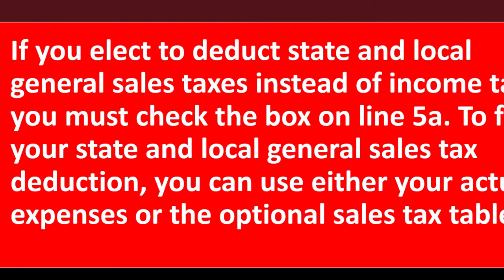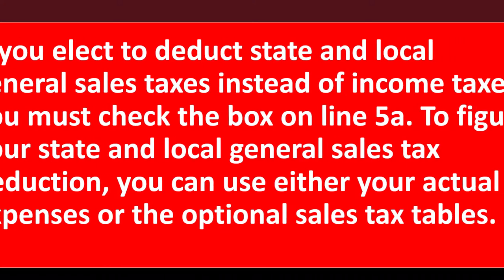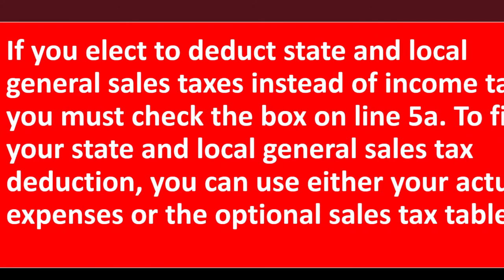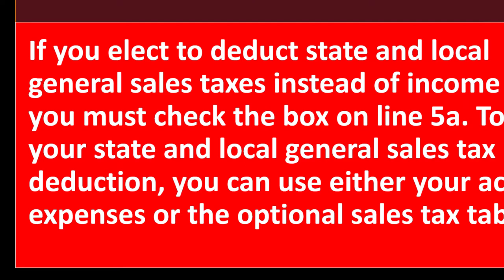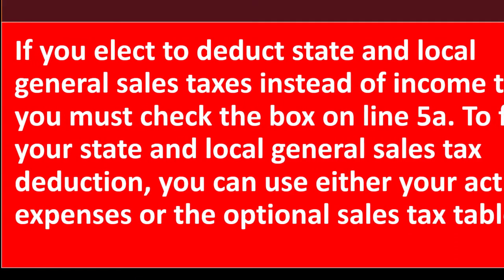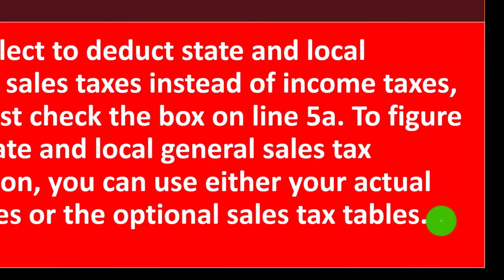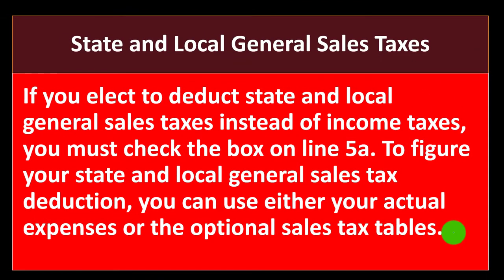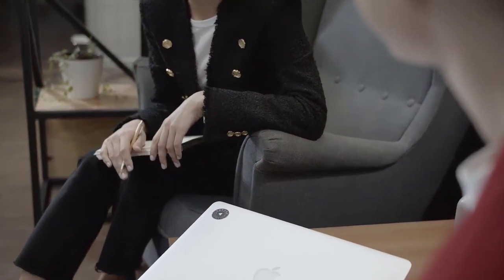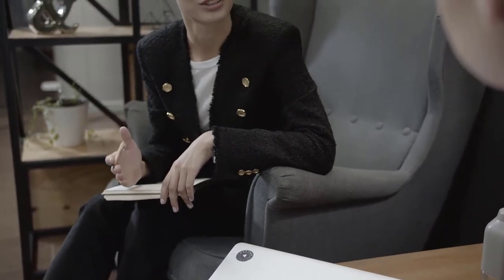Now we've got these two things that are deductible, and you've got to take either one of the two. If you elect to deduct state and local general sales taxes instead of income taxes, you must check the box on Line 5A to figure your state and local general sales tax deduction. You can use either your actual expenses or the optional sales tax tables — the easiest approach using software. If you're not taking the income tax, you're going to take the sales tax, and you can calculate that by adding up everything purchased or using the sales tax tables.